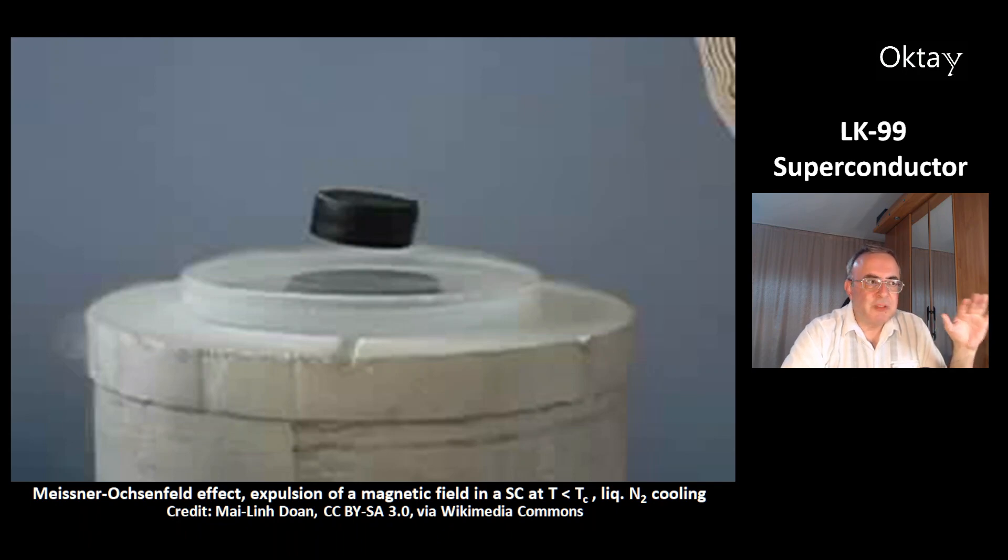This is another nice movie of the Meissner-Ochsenfeld effect, which is an expulsion of a magnetic field in a superconductor. Once the temperature is below the critical temperature, high-temperature superconductor means you can achieve superconductivity by cooling it with nitrogen.